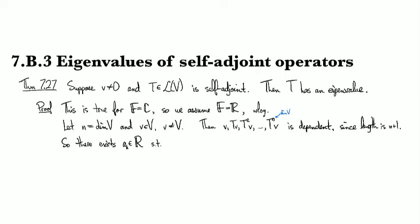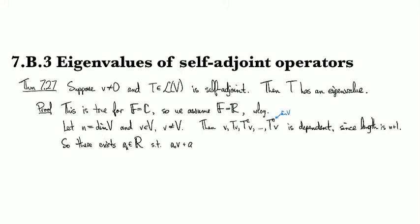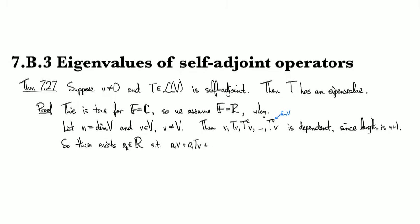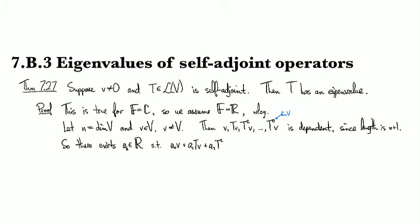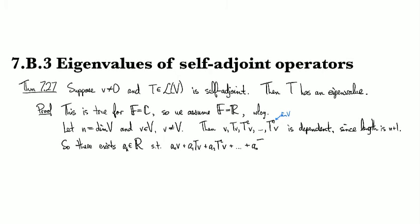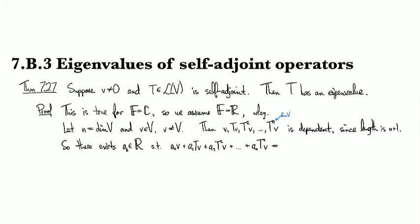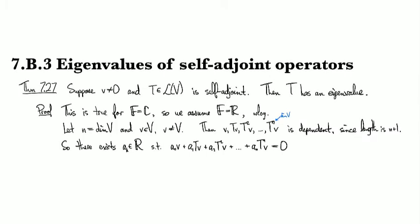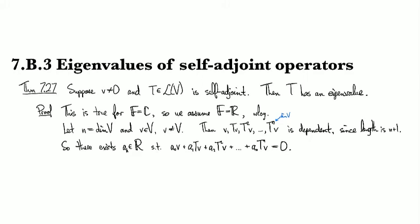Such that if we have a_0 v plus a_1 Tv plus a_2 T squared v and so forth, then we can make that equal to 0 because that's the definition of dependence.